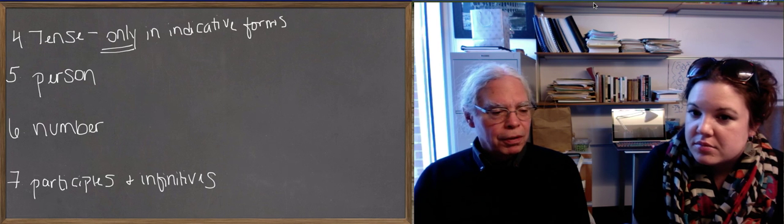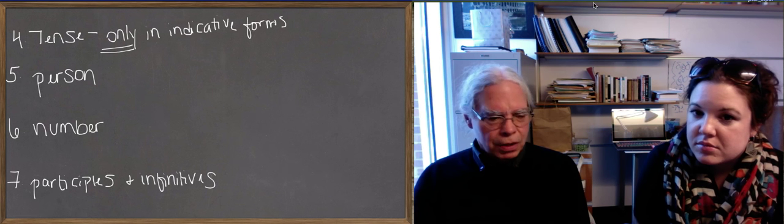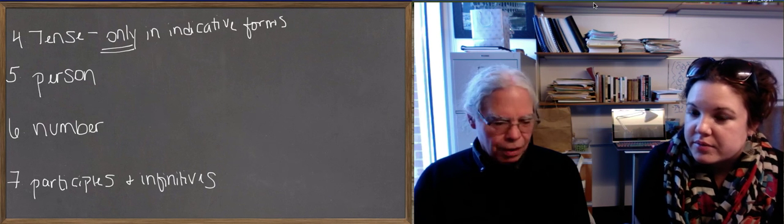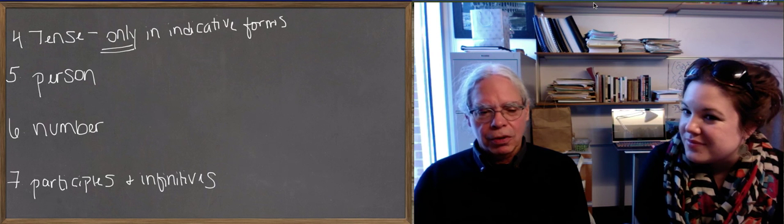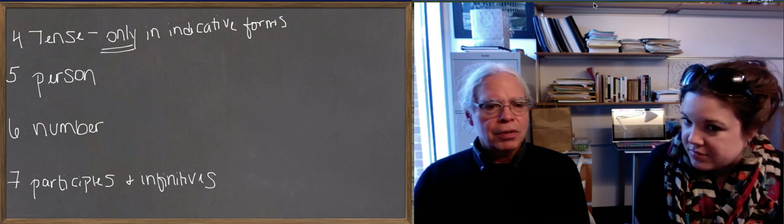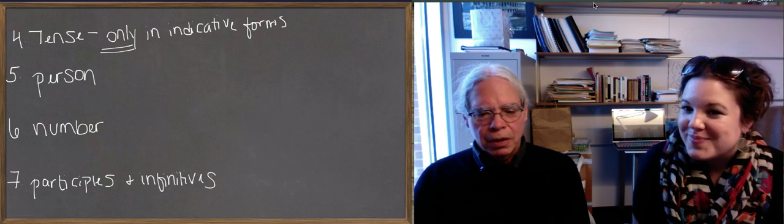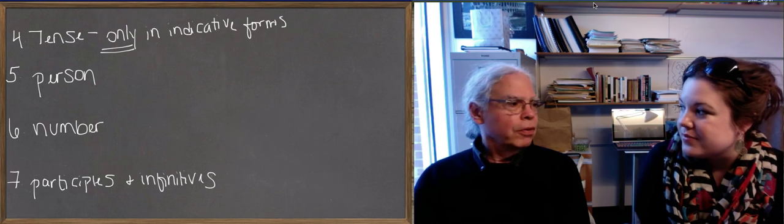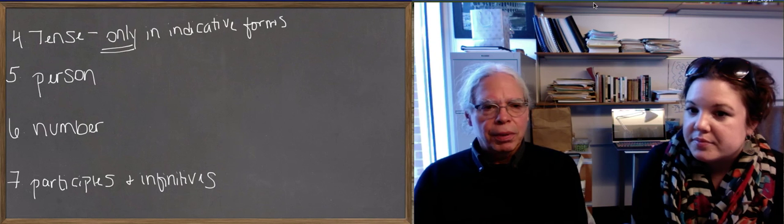When it comes to the number in Greek verbs, just like in nouns, verbs can be singular or they can be plural. They can also be dual. In Greek. We're not learning the dual in this version of Greek, but you're going to come across it as a real thing. The dual is for natural pairs. It's not two lollipops, but two eyes or two hands. Things that come together in pairs.